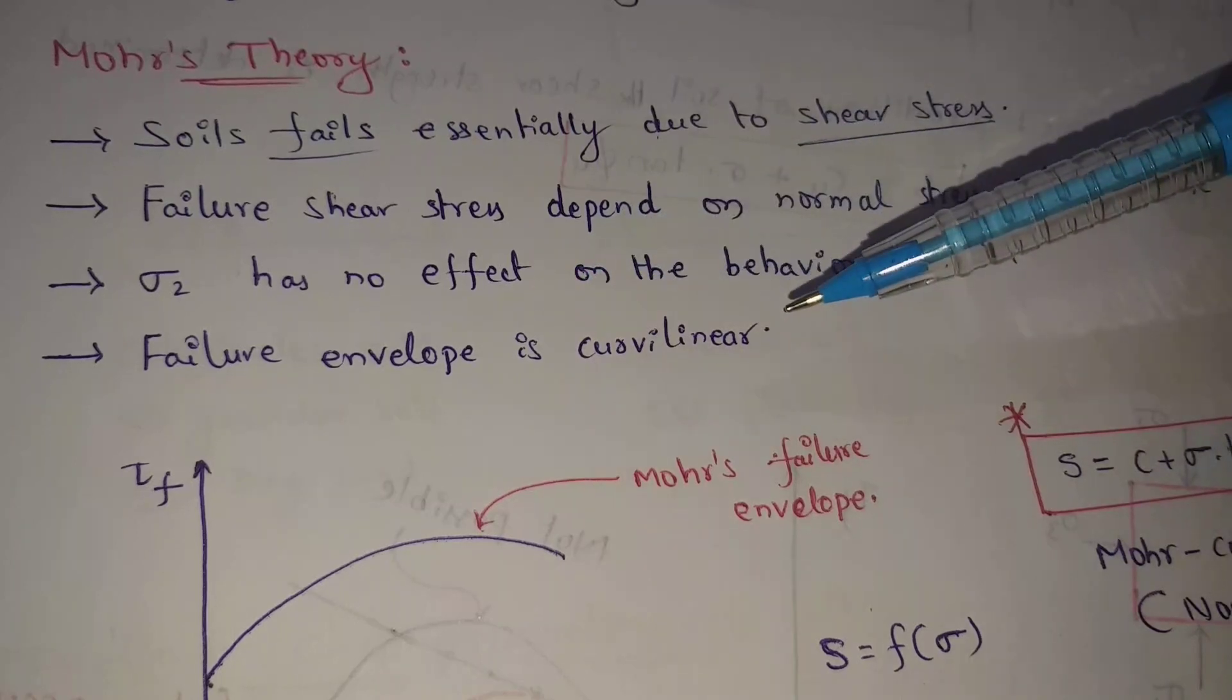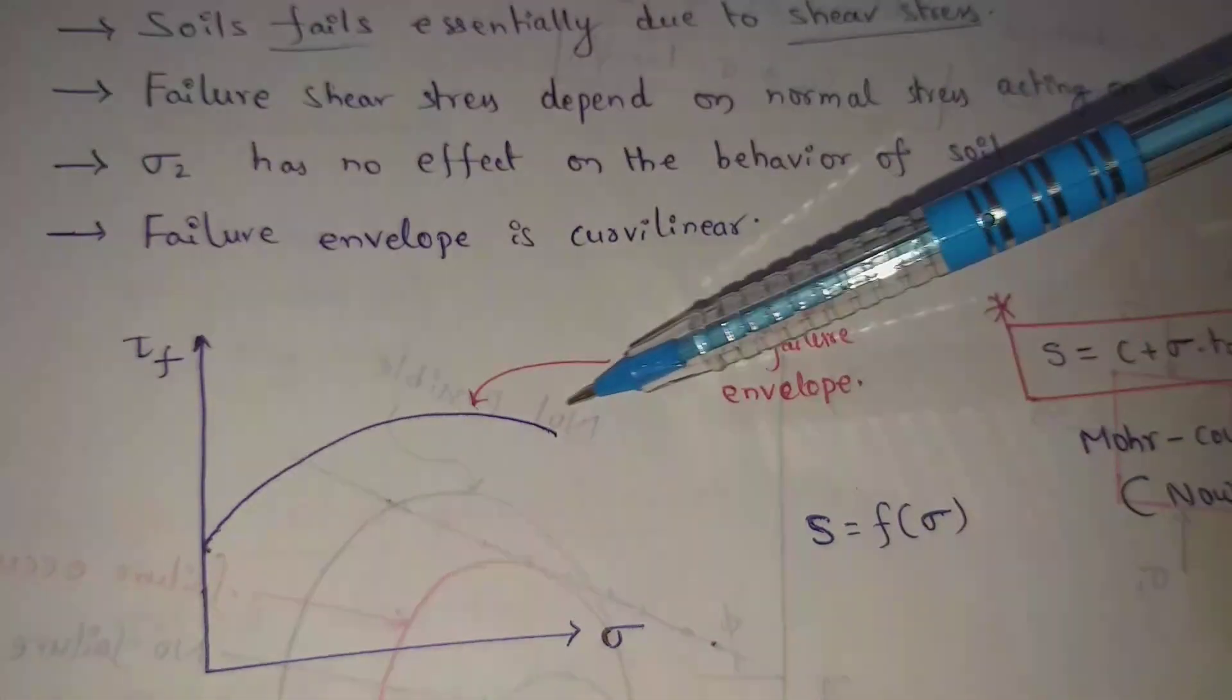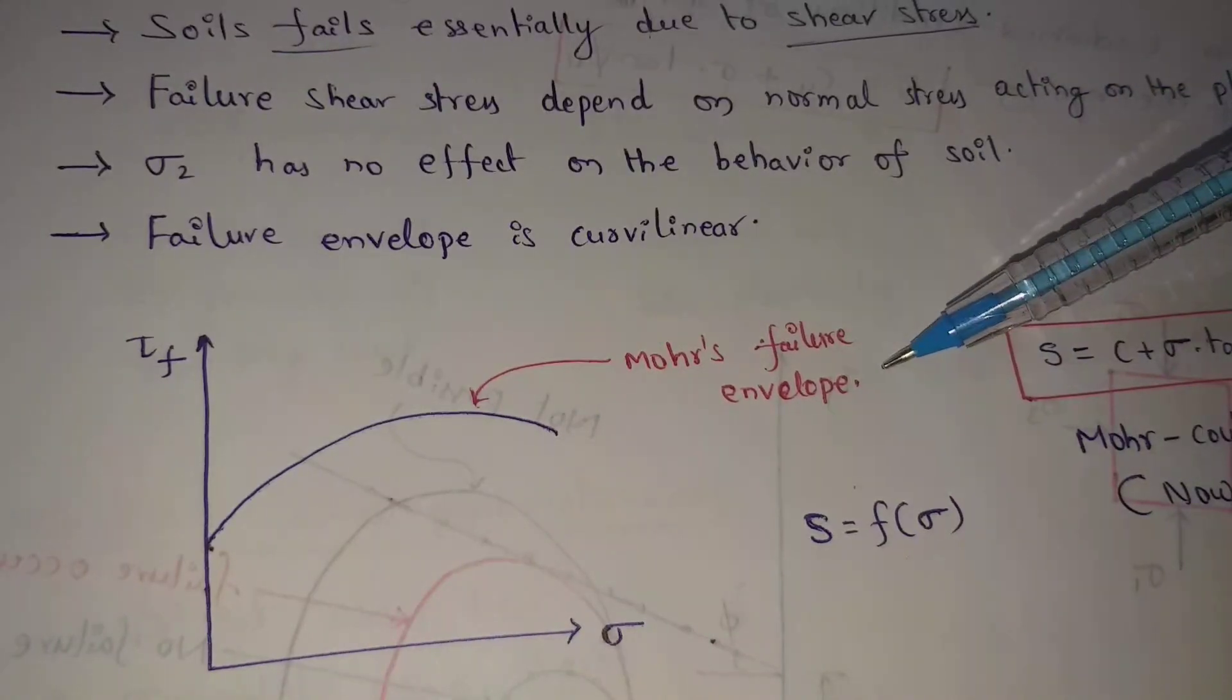Fourth one, failure envelope is curvilinear. This is curvilinear shape that is Mohr's failure envelope.